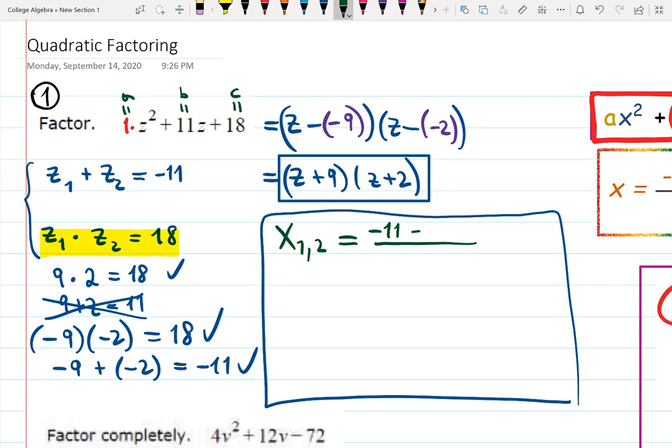Equals minus b. So now I can make some notes. And it's going to be a is 1, b is 11, c is 18. Minus b, minus 11, plus minus the square root, b squared, that's 11 squared, minus 4, that's part of the formula, a, that's 1, and then c, that's 18.